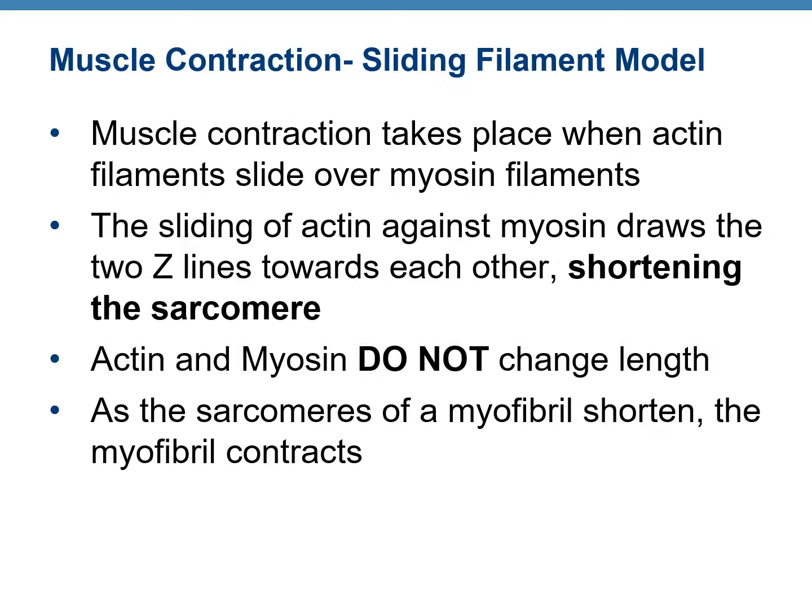Muscle contraction is explained by a sliding filament model. It is called sliding filament because one myofilament is sliding over another. Muscle contraction occurs when the actin myofilament slides over the myosin filament, bringing the two adjacent Z lines closer to each other. Since the distance between the two Z lines is the sarcomere, when the Z lines come closer, the sarcomere shortens. That means muscle contraction occurs by the shortening of the sarcomere, and that is why the sarcomere is the contractile unit.